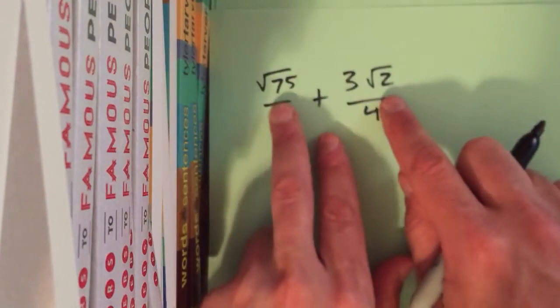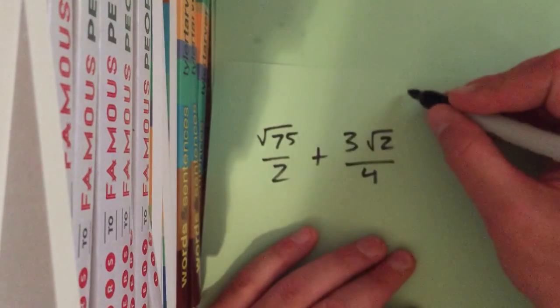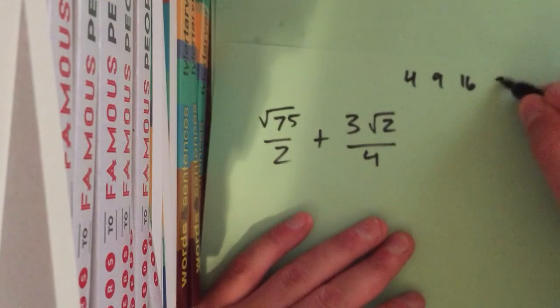First thing we want to do is simplify the radicals here. To simplify a radical, you're really looking for these things. You're looking for 4, looking for 9, you're looking for 16, and you're looking for 25.